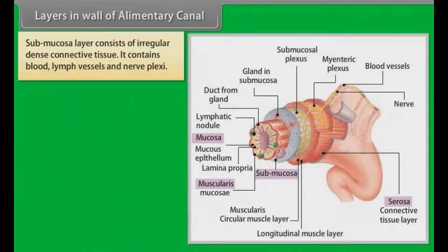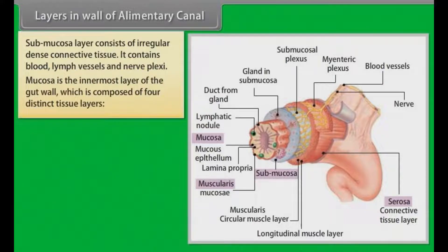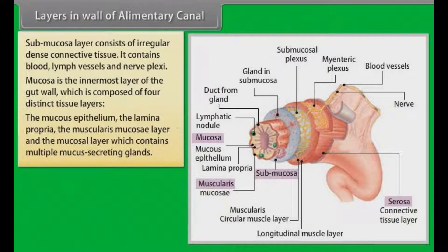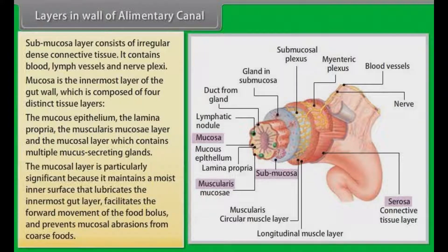The submucosa layer consists of irregular dense connective tissue. It contains blood, lymph vessels and nerve plexi. The mucosa is the innermost layer of the gut wall, composed of four distinct tissue layers: the mucous epithelium, the lamina propria, the muscularis mucosa layer, and the mucosal layer which contains multiple mucous secreting glands. The mucosal layer maintains a moist inner surface that lubricates the innermost gut layer, facilitates forward movement of the food bolus and prevents mucosal abrasions from coarse foods.